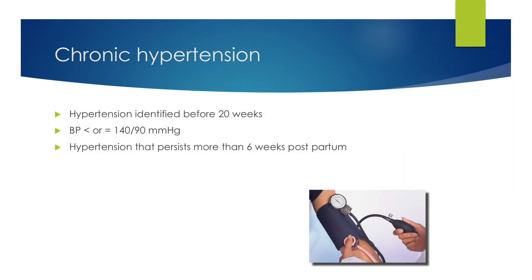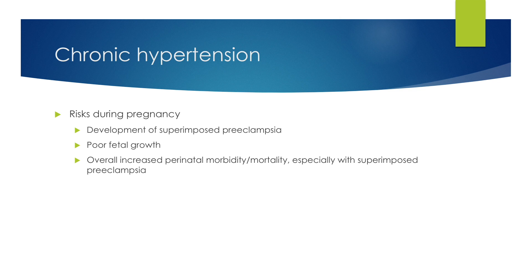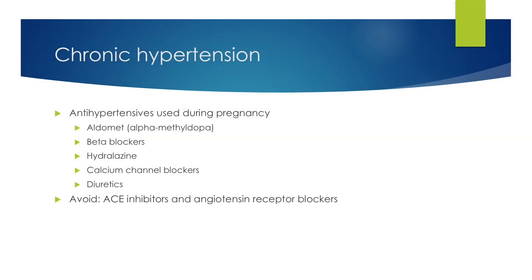Chronic hypertension is hypertension identified before 20 weeks gestational age, including a blood pressure greater than 140 over 90, and can also be diagnosed with hypertension that persists for more than 6 weeks postpartum. There is an increased risk of developing superimposed preeclampsia. Chronic hypertension by itself can cause poor fetal growth and overall increased perinatal morbidity and mortality, especially with superimposed preeclampsia. Many antihypertensive medications can be used during pregnancy, including Aldomet (alpha-methyldopa), beta blockers, hydralazine, calcium channel blockers, and diuretics. It is important to avoid ACE inhibitors and angiotensin receptor blockers, as these can be teratogenic.